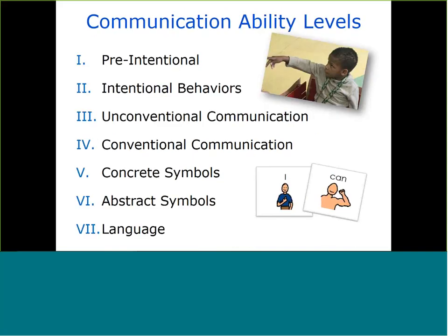The Communication Matrix is organized by behaviors at seven levels of communication ability, and the use of these behaviors is assessed across four basic reasons to communicate: refusing things that aren't wanted, obtaining things that are, engaging in social interactions, and providing or seeking information. For each of these reasons to communicate, all of the behaviors a student uses are observed and reported. At level one, it's the pre-intentional or reflexive behaviors — those that express things like a state of hunger or discomfort — that we interpret as the observer.